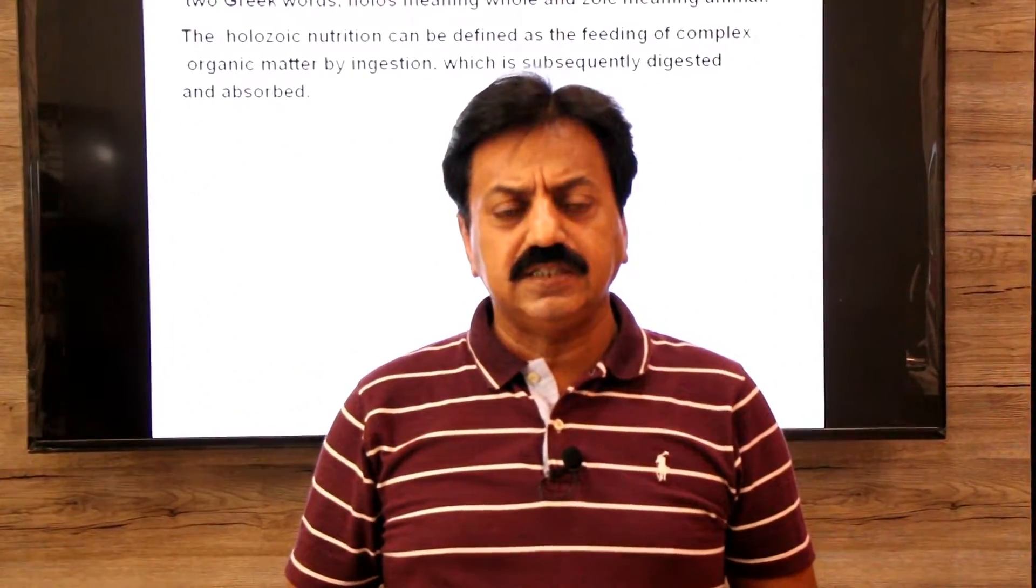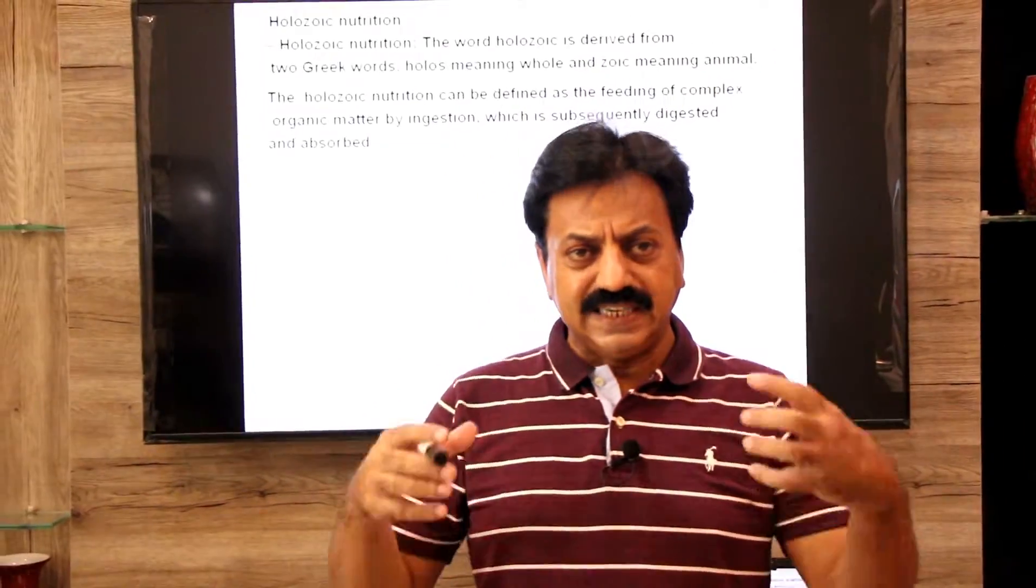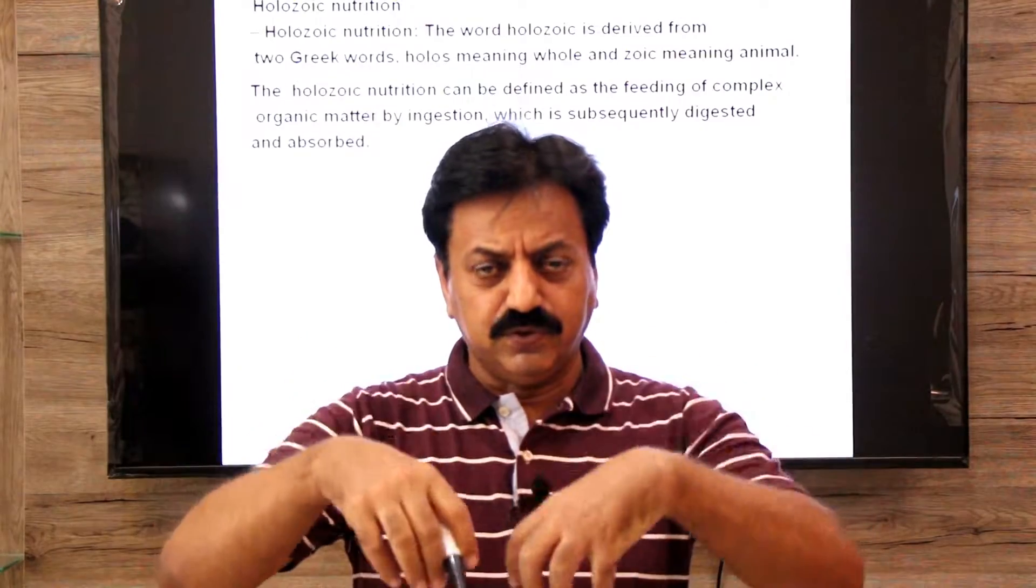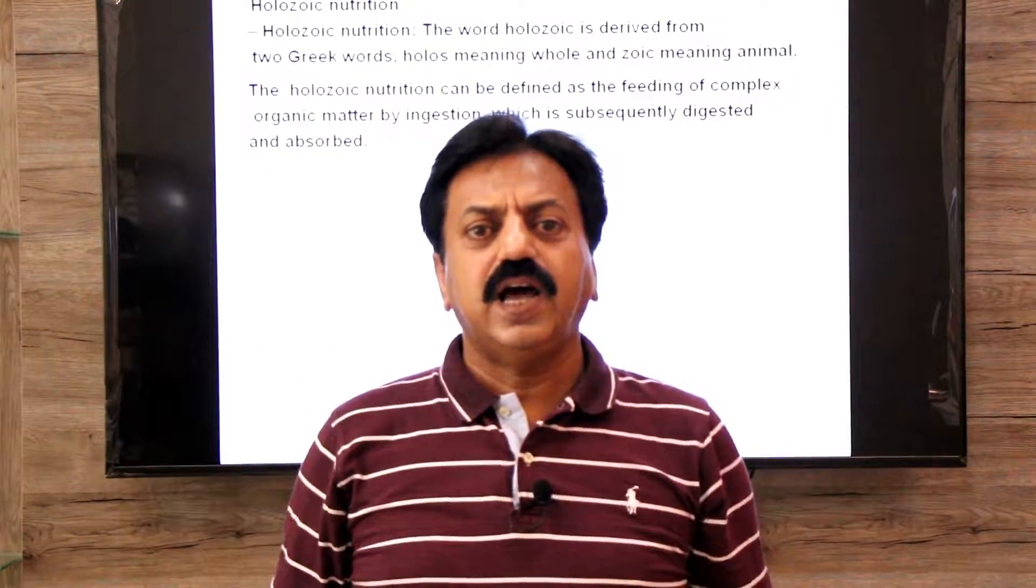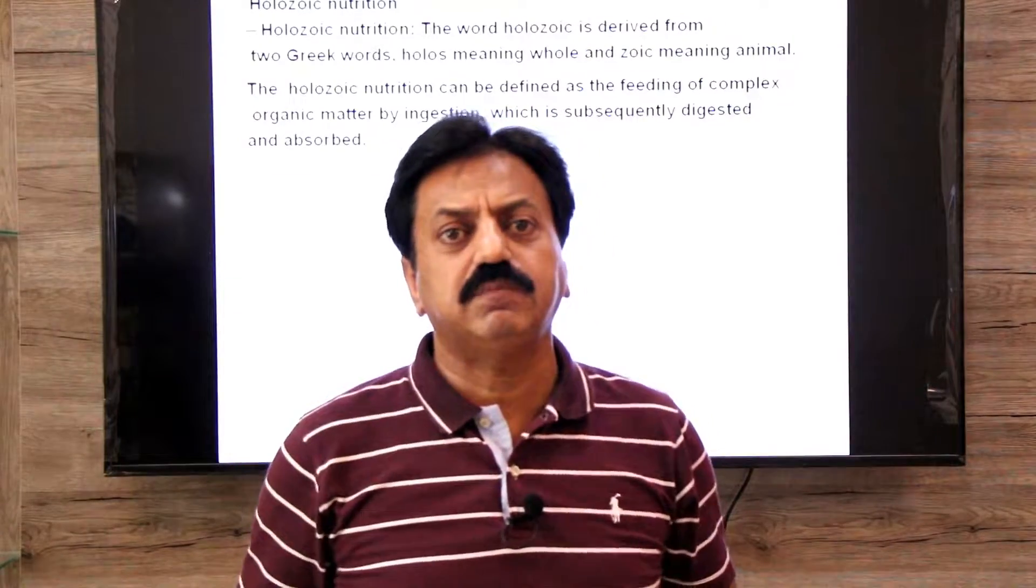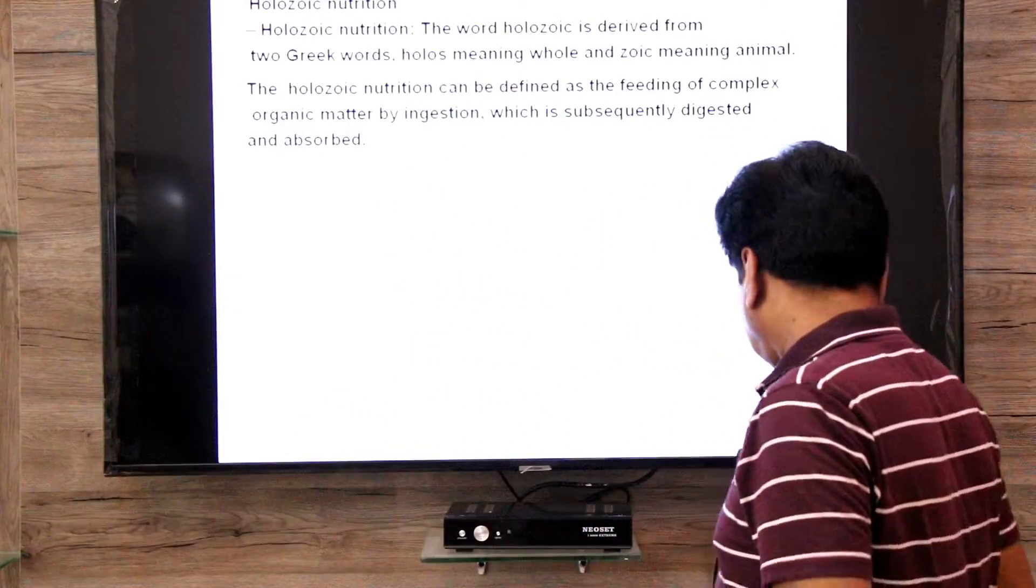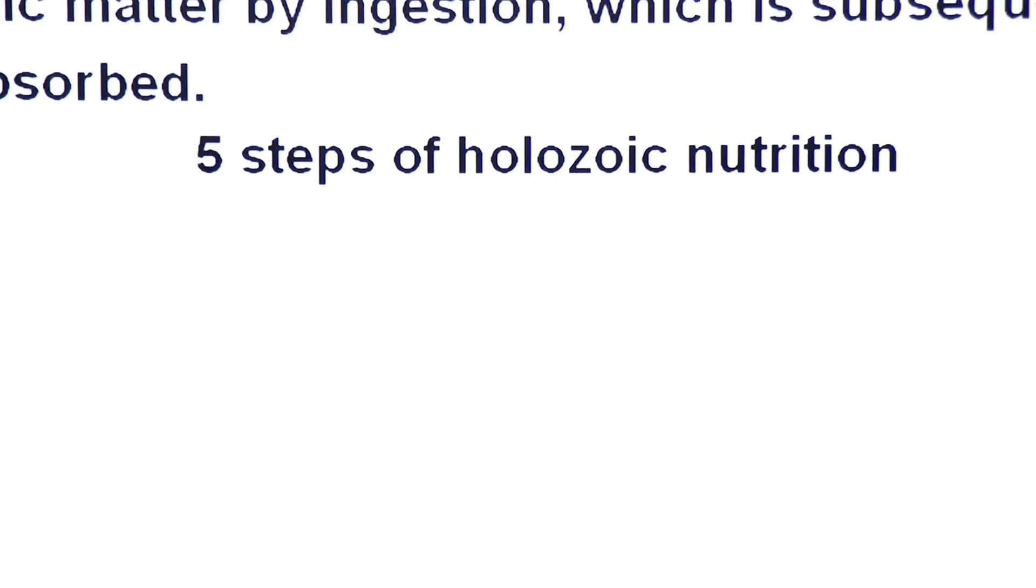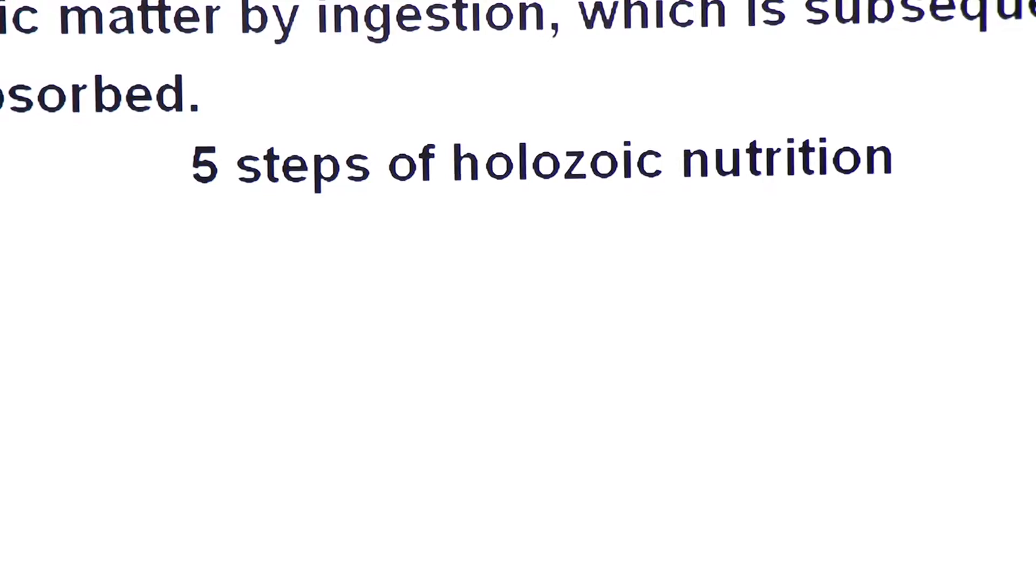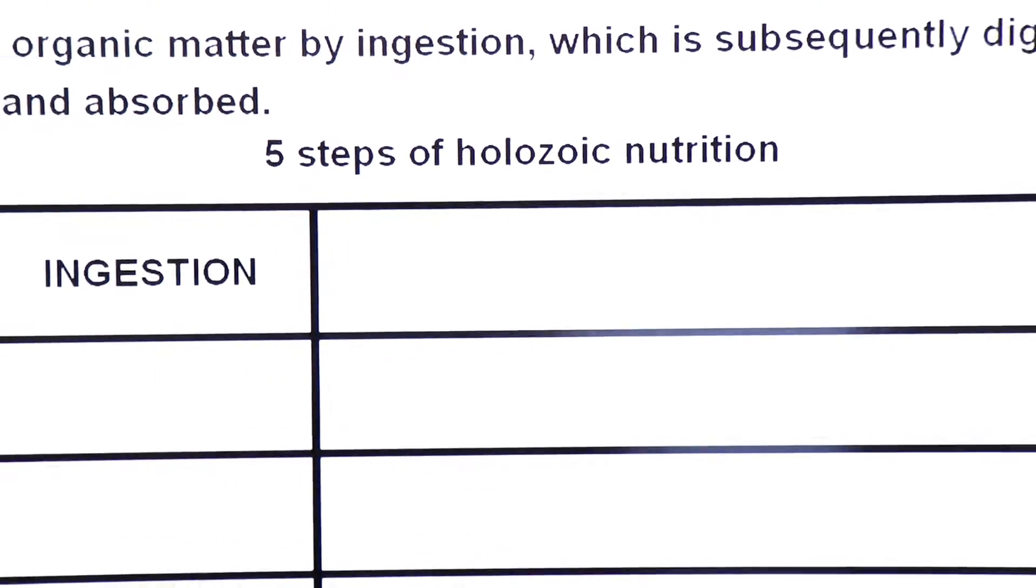This holozoic nutrition is a type of nutrition which is first ingested, then digested, then the food end products are absorbed, then assimilation and egestion. These are the five steps. If we talk about holozoic nutrition, then there are five steps of holozoic nutrition.